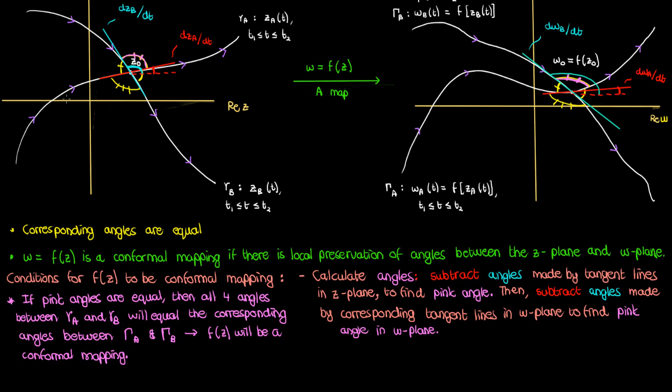At this point, I've set up my pre-image scenario with the curves on the z-plane, and my image scenario with the curves on the w-plane after we do the transformation or the map f of z. Let's find some angles. Specifically, we're going to focus on this angle between gamma a and gamma b at the intersection z0, then we're going to see how this angle changes as we undergo the transformation f of z.